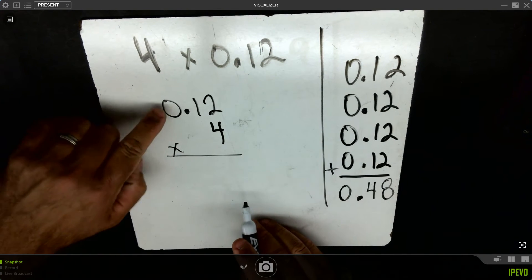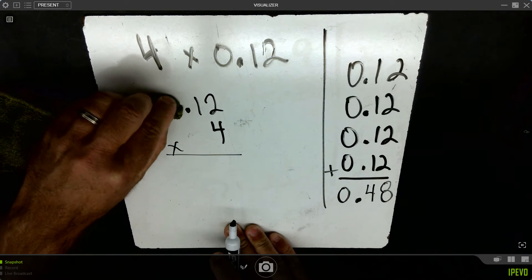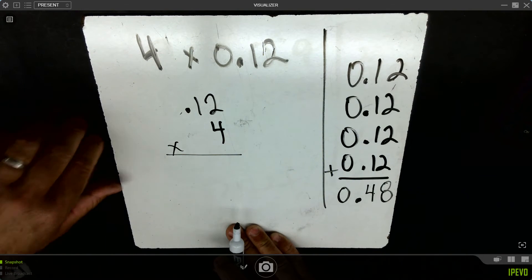If I want to, I can take that 0 in the ones place and remove it, just so it's less distraction. Let's go ahead and do the math.